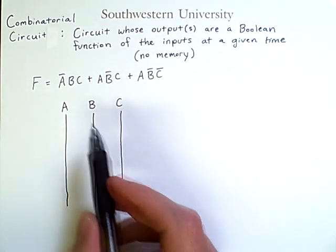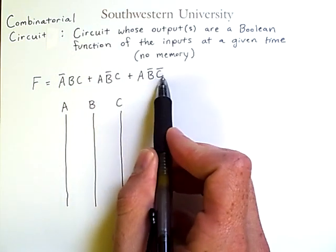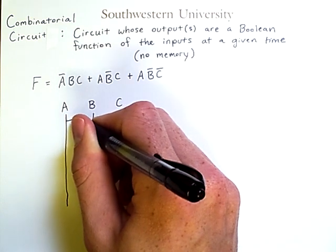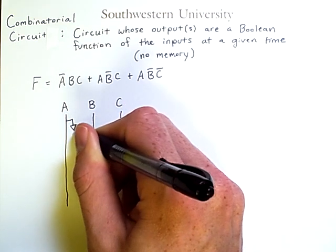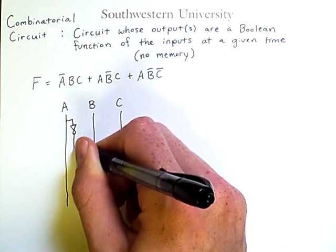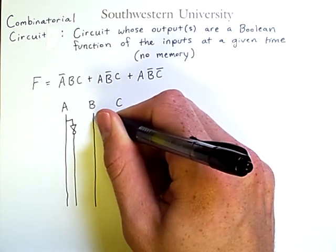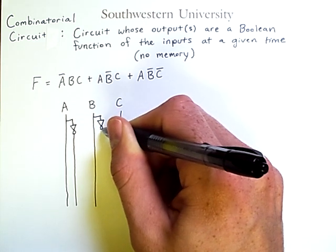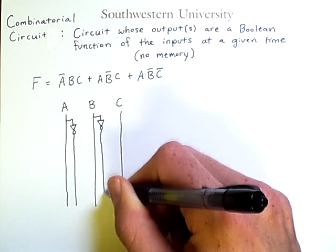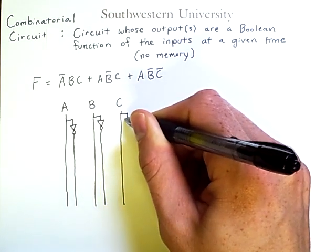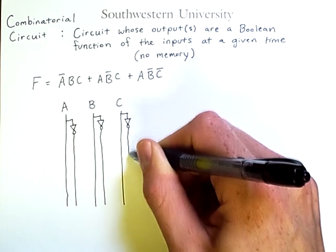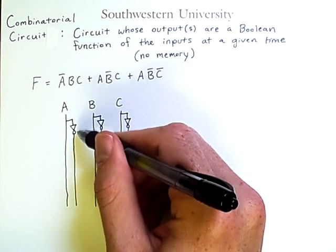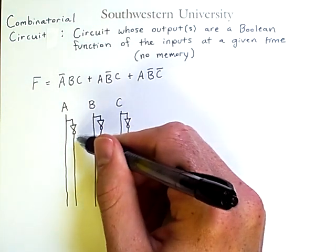Because we need the negation of each of these variables, we will also branch off with a NOT gate and have a line coming out of that so that the negated value of each input is also available. The signal going along this line is A, and the signal along this line below that gate is NOT A.